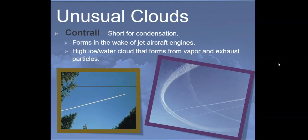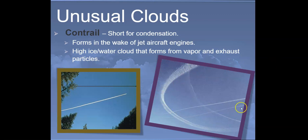Next is a contrail, short for condensation trail. They are not the government spraying things — all it is is jet aircraft engines combusting jet fuel, and some of what comes out forms a short trail of high ice and water clouds from the vapor and exhaust particles. It just takes a while for them to dissipate and disappear since they're so high up.